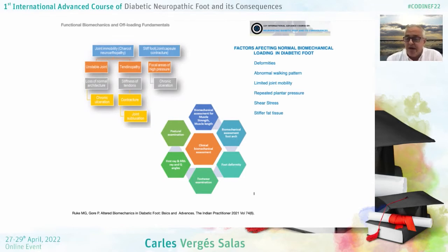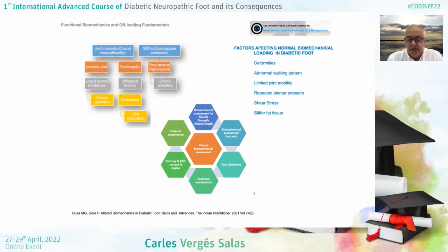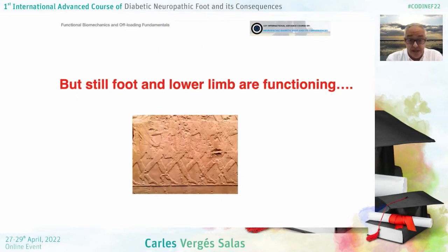There are many factors that could affect the biomechanics of the diabetic foot: deformity, abnormal gait, limited range of motion, repeated stresses and forces, and more. These produce a change in the behavior of the foot and lower limb. But still, the foot and lower limb are functioning despite all of this.